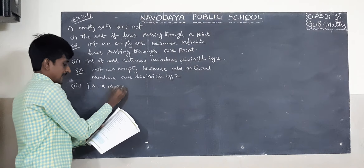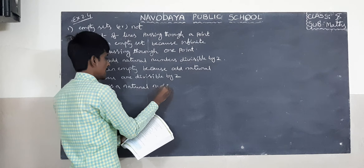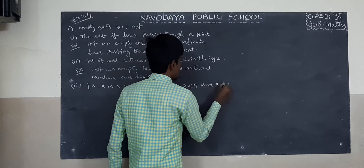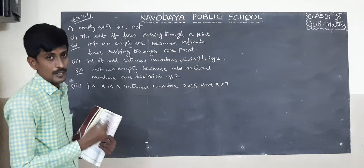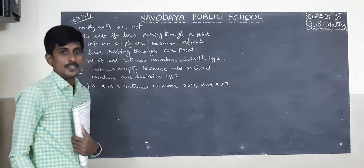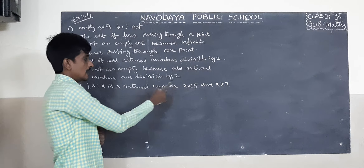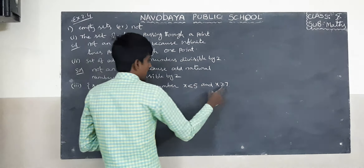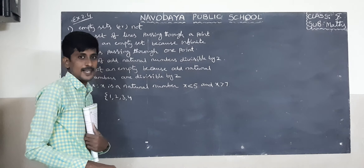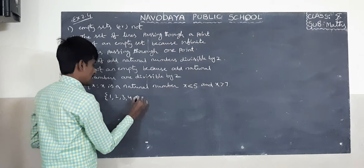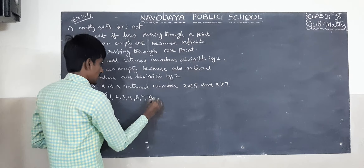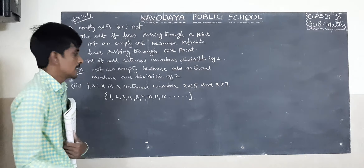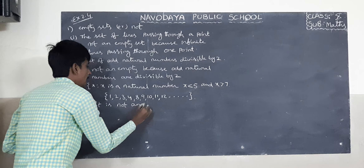Third one: x is a natural number, x is less than 5 and x is greater than 7. Natural numbers less than 5 give elements 1, 2, 3, 4. Natural numbers greater than 7 give 8, 9, 10, 11, 12, and so on. So there are many elements and it is not an empty set.